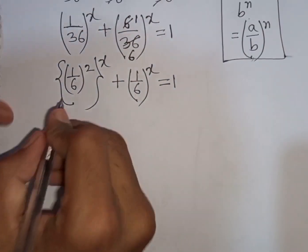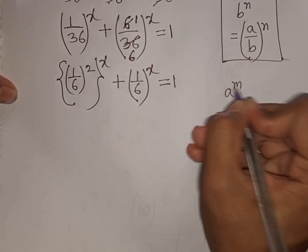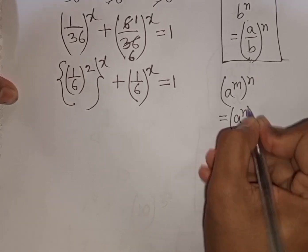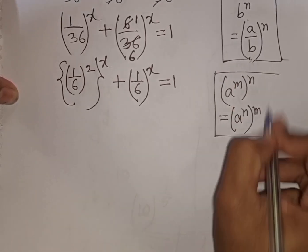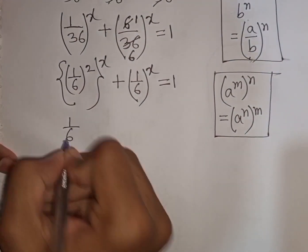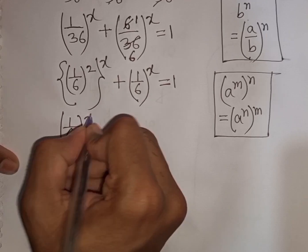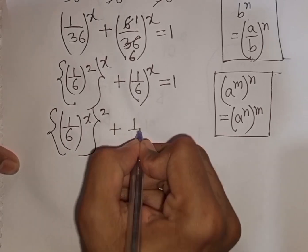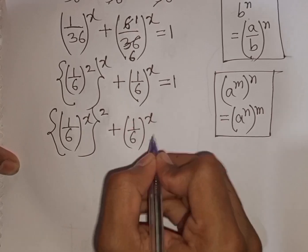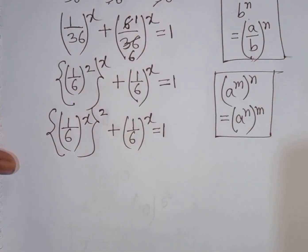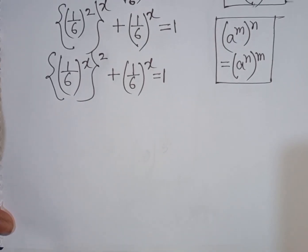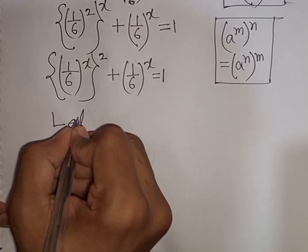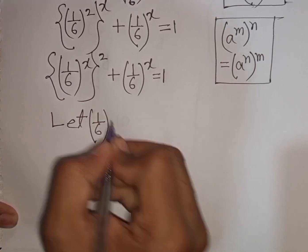Now here we can apply the exponential rule that (a power m) power n is equal to (a power n) power m. According to this rule we can write (1/6) power x bracket power 2 plus (1/6) power x is equal to 1. We see both terms are (1/6) power x, so let y equal (1/6) power x.